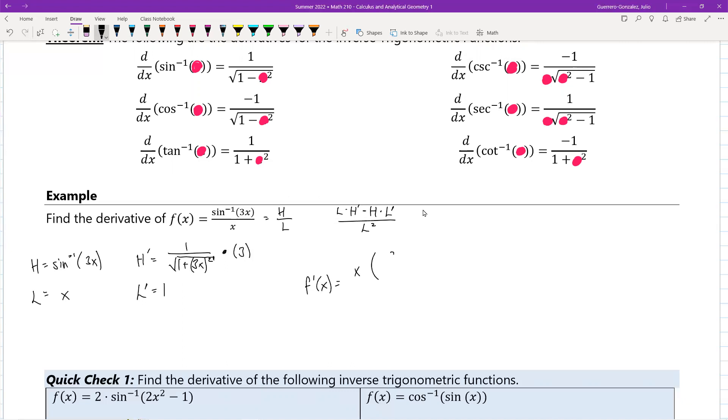So times 3 over the square root of 1 plus 3x squared minus high, sine inverse of 3x times d low, which is 1, all over the bottom squared. So the bottom is x squared, and we are done.